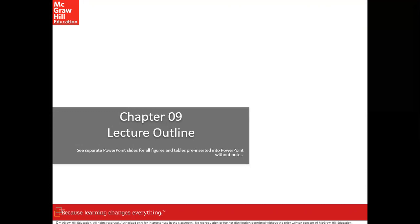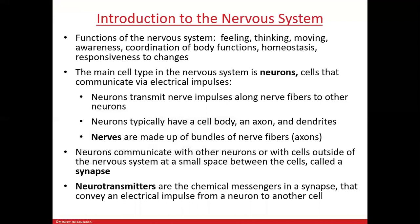This is nervous system lecture number one, accompanying the Hole's Essentials of Anatomy and Physiology textbook. We will cover an introduction to the nervous system, its functions, neuroglia, neurons, and structural and functional classification of neurons. The nervous system is the master control system for your body — it keeps you feeling, thinking, moving, and aware of what's going on. It coordinates body functions and maintains homeostasis, responding to changes in your internal or external environment.